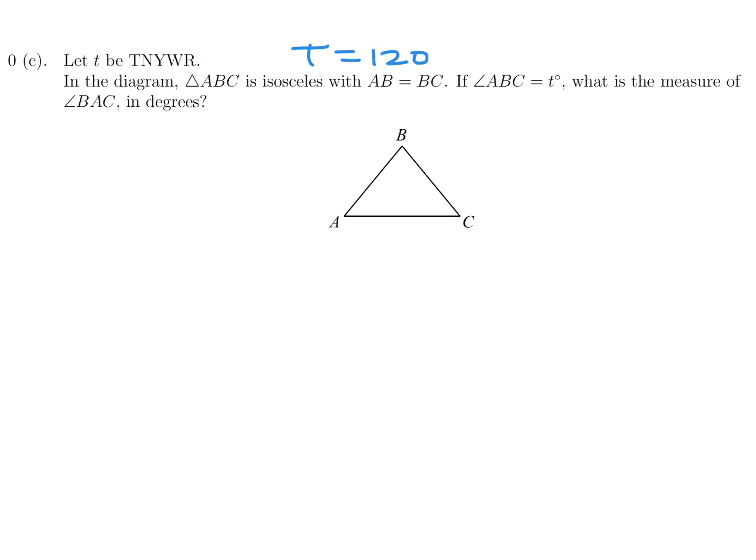In the diagram, triangle ABC is isosceles, AB equals BC. Angle ABC is t, what is the measure of BAC? So ABC is t, so that's 120 right there. And then since AB is equal to BC, these two angles would be the same. So we'll just call them x and x. So that means 120 plus 2x is equal to 180, since the sum of the angles of a triangle add up to 180. So therefore 2x would be 60, and therefore x is 30.